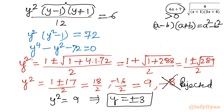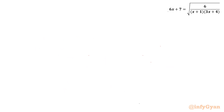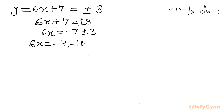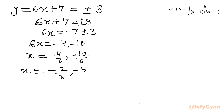Substituting back: 6x plus 7 equals plus or minus 3. Taking away 7 from both sides: 6x equals minus 7 plus or minus 3. With the plus sign: 6x equals minus 4, giving x equals minus 4 over 6, which is minus 2 over 3. With the minus sign: 6x equals minus 10, giving x equals minus 5 over 3.